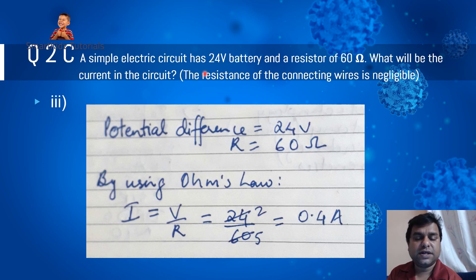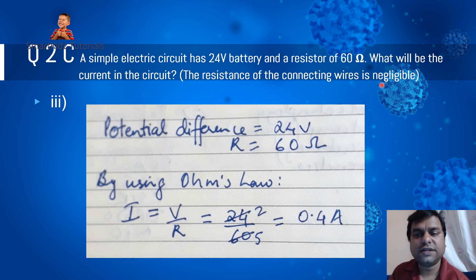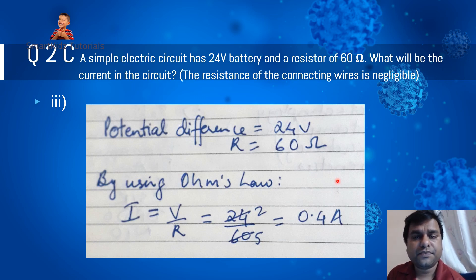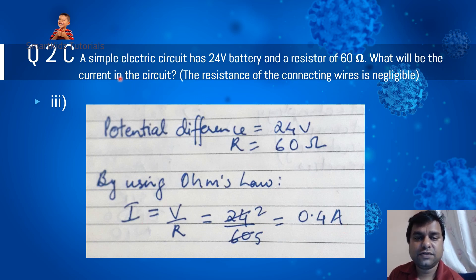Another problem: a simple electric circuit has a 24-volt battery and a resistor of 60 ohms. What will be the current in the circuit? The resistance of the connecting wires is negligible. Applying Ohm's law: I = V/R = 24/60. Simplifying: 24/60 = 2/5 = 0.4 amps. That is the correct answer — the current flowing through this simple electric circuit.